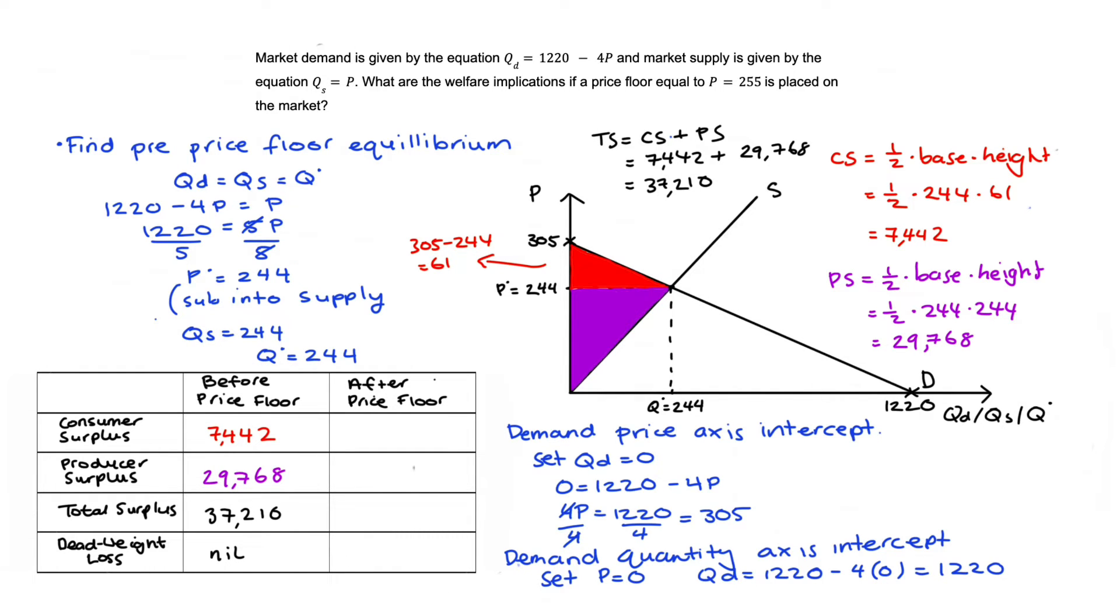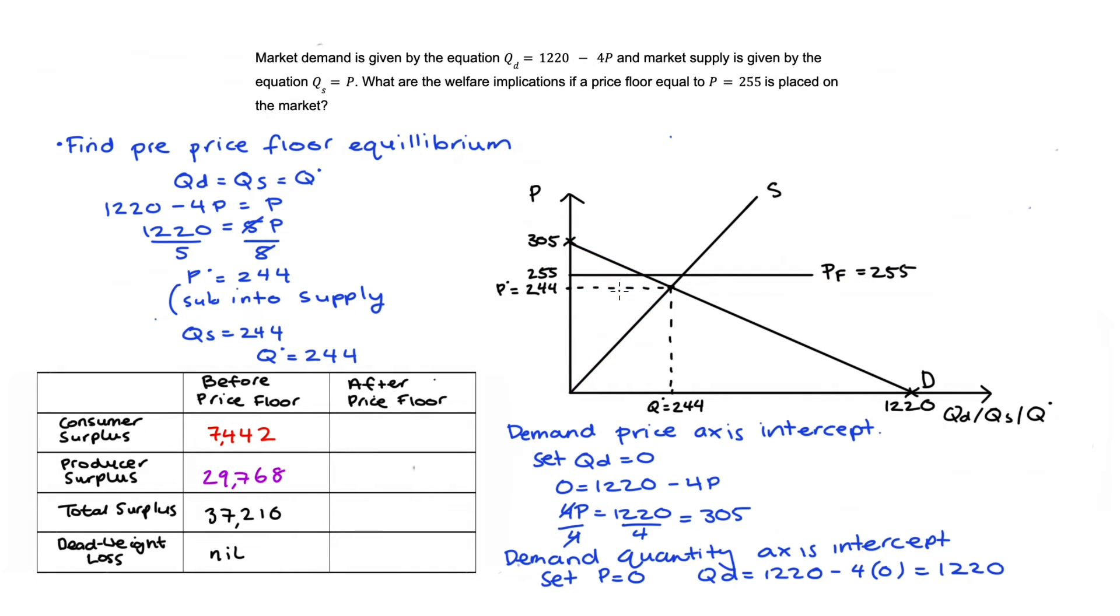The next thing we can do is impose our price floor. The price of 255 is above our equilibrium price. The price floor means we cannot go below 255. Since the equilibrium price is 244, lower than 255, this is a binding price floor. It makes a difference to what happens in our market. Using our demand curve, at the price of 255 quantity demanded is 1,220 - 4(255) = 1,220 - 1,020 = 200.